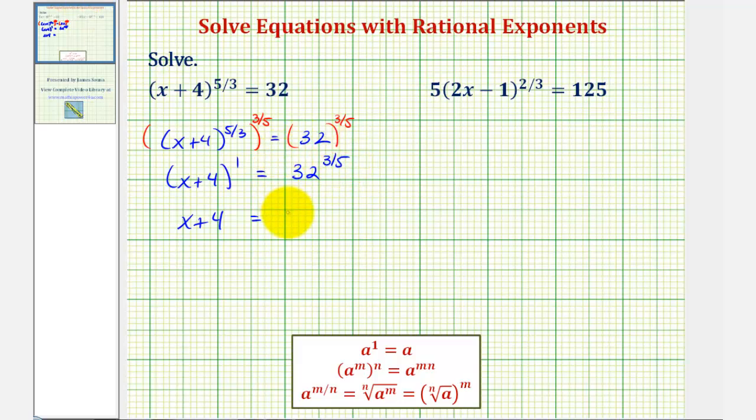So because the denominator is 5, we have the fifth root of 32. Because 32 is a perfect fifth root, we'll go ahead and just raise this to the third power.